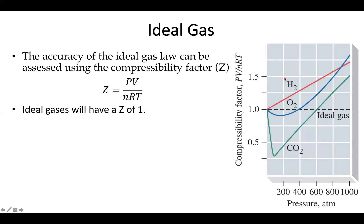Every gas will have a different point at which the ideal gas law stops working. For example, hydrogen has essentially no intermolecular forces and moves very fast. Oxygen can have a little induced intermolecular forces but isn't the fastest moving molecule. CO₂ moves a little bit slower but sticks a lot more than the other two. So they're all going to have slightly different behaviors and different points at which they break down.